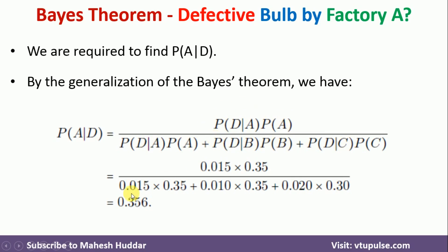Substituting all the given values, we get 0.356 as the probability — that is, there is a 35.6% chance that the defective bulb is manufactured at factory A. I hope the concept is clear. If you like the video, please like and share with your friends, press the subscribe button for more videos, and press the bell icon for regular updates. Thank you for watching.